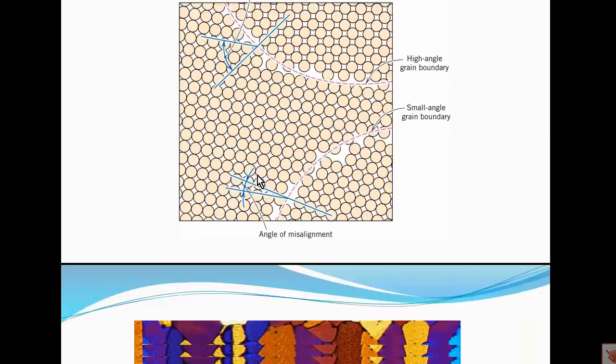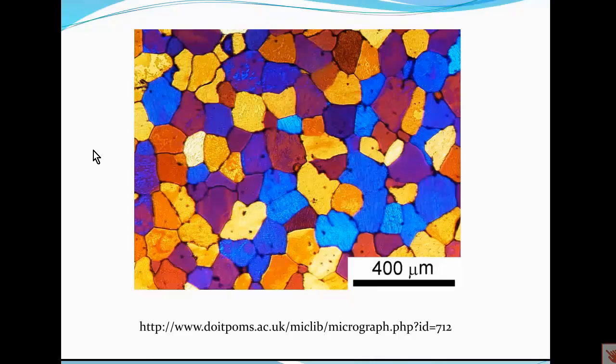Let's have a look at this image of a piece of aluminum that has been polished and then etched. The etching process involves putting a chemical onto the polished surface of the metal. The rate at which the chemical will attack the metal will depend upon the orientation of the crystal. In this way, visual contrast is gained between regions of different crystalline orientation. The contrast is made clearer by the use of polarized light.